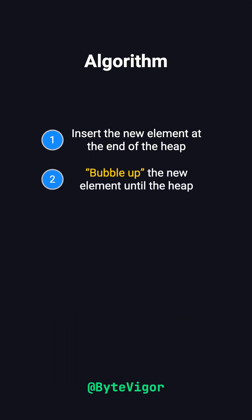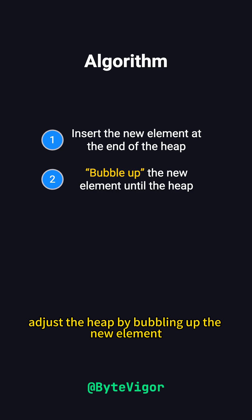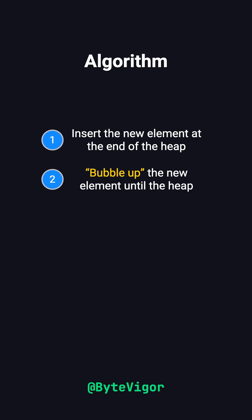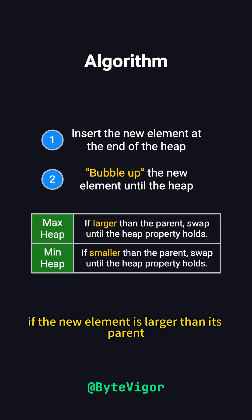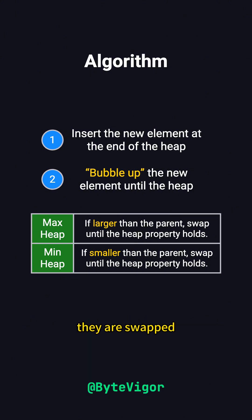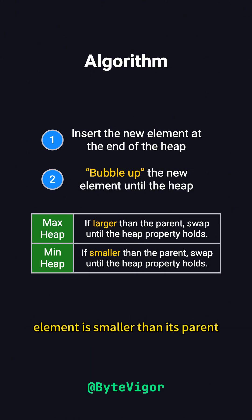Second, adjust the heap by bubbling up the new element. In a max heap, if the new element is larger than its parent, they are swapped. This repeats until the element is smaller than its parent or reaches the root.